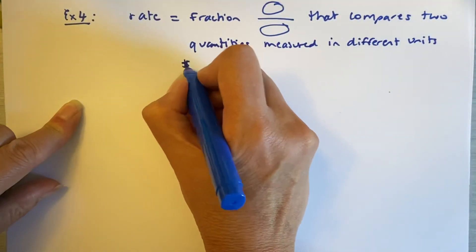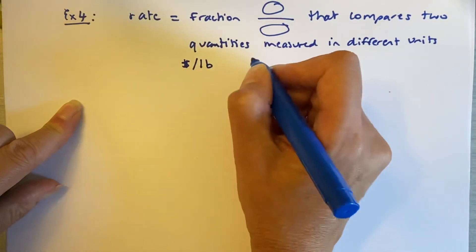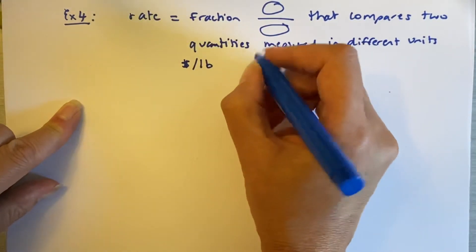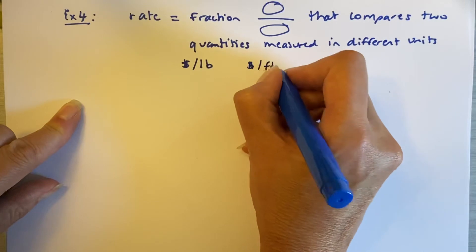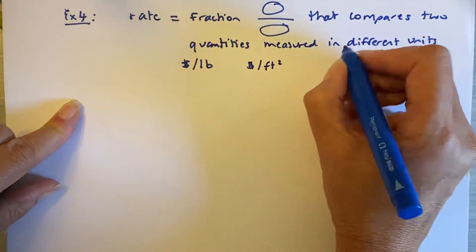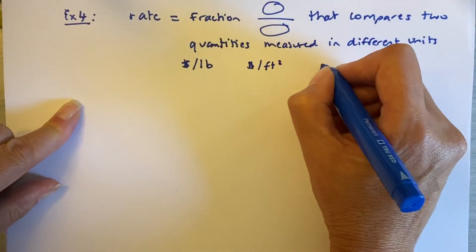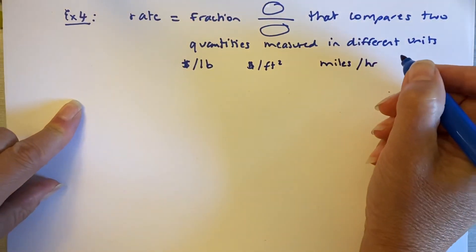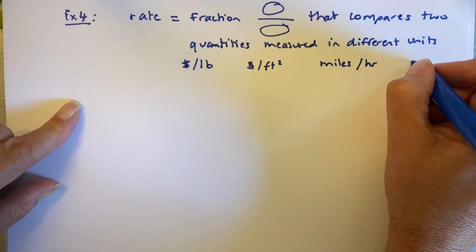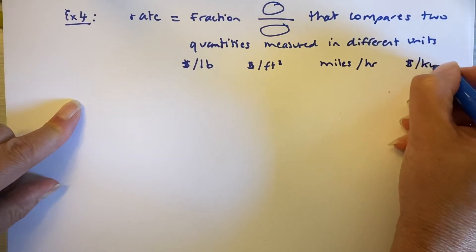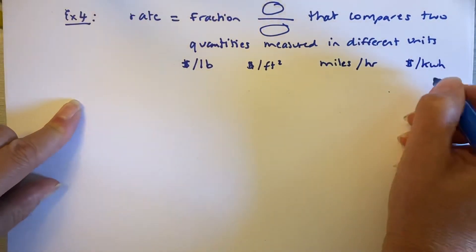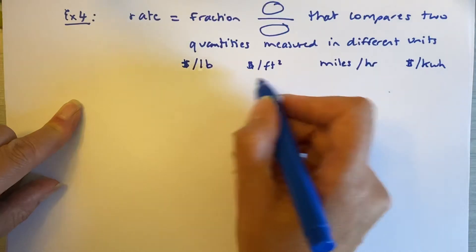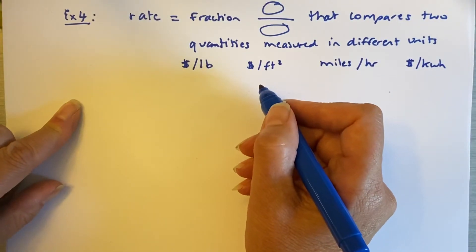So it's something per something that compares two quantities which have different units, measured in different units. So, dollars per pound. Let's see. Dollars per square foot. Let's see. Miles per hour. Let's see. Dollars per kilowatt hour, which is something you haven't learned yet. But essentially, these are rates.